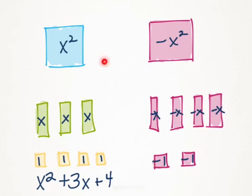So when I combine the monomials on the left side here I get x squared plus 3x, I have 3 of these x's, plus 4.